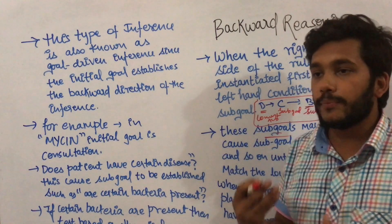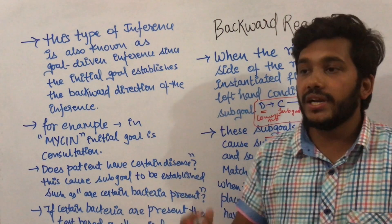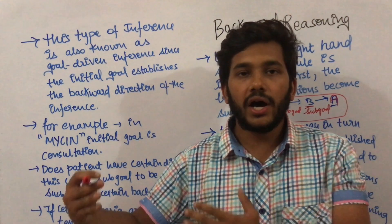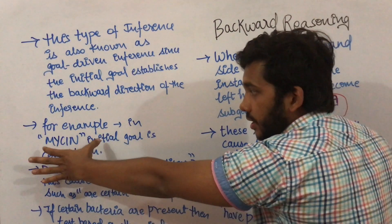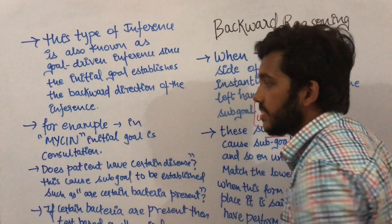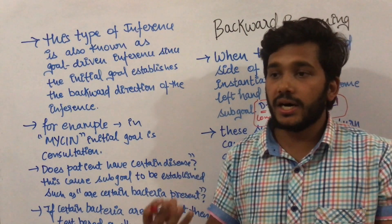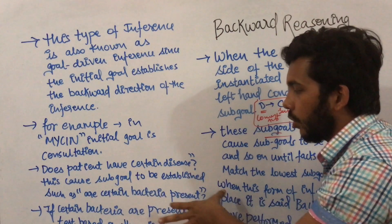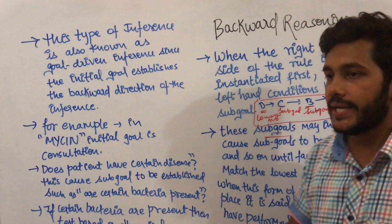If you tell the doctor you have MYCIN, the doctor will move to another sub-goal: what type of bacteria are present in your body? Based on the bacteria, the doctor will give a few tests to check whether that type of bacteria is present or not. So the initial goal is consultation, your sub-goal is to find the disease problem — why this disease is occurring — and then you establish the sub-goal of which type of bacteria are present in the body.